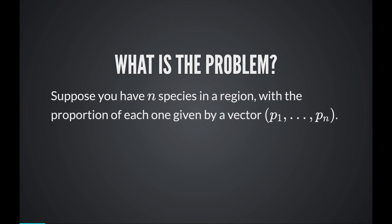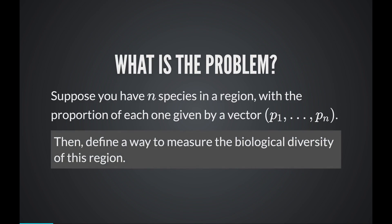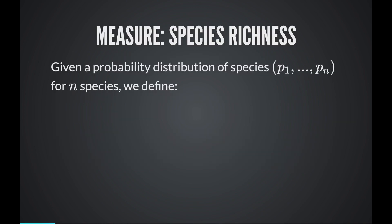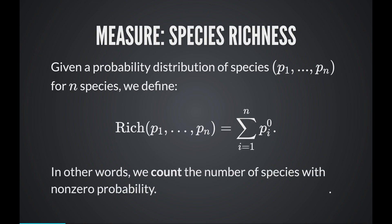The problem is to define a way to measure the biological diversity of this region. The most, and perhaps easiest, way to do it is to use species richness — simply count the number of species you have in the region. This can be defined by the formula: the sum from i equals 1 to n of Pi to the 0. In other words, you're just counting the number of species, using the convention that 0 to the power of 0 is 1.